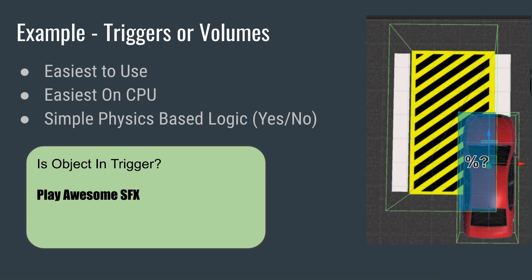Triggers are based on simple physics-based logic — essentially yes or no. What we're doing is creating this idea of a trigger where you can pass through the object and it knows if you've passed through before. So far we've shown triggers that are repeatable: walk through the cube and it plays the sound, or a momentary one where walking into the area turns it on and walking out turns it off.